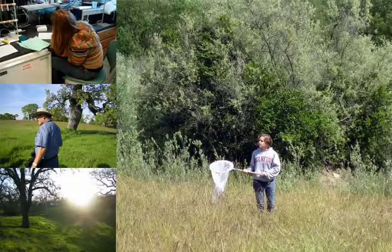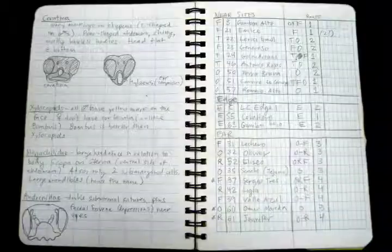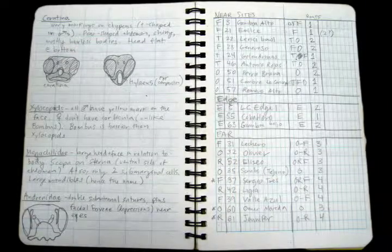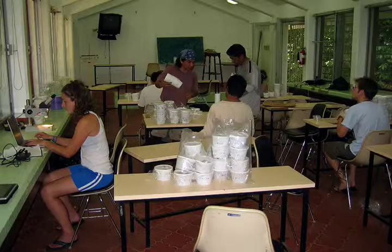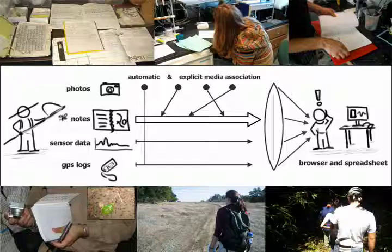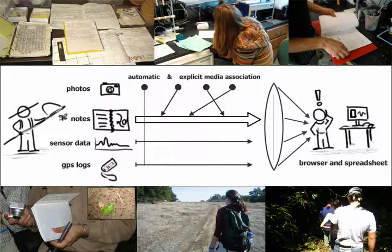Through a study of field biology practices, we observed that biology fieldwork generates a wealth of qualitative and quantitative information, requiring substantial labor to coordinate and distill. These observations motivated ButterflyNet, a system integrating field researchers' paper notes with information explicitly captured or ambiently available in field sites, including digital camera photographs, sensor network data, and GPS logs.